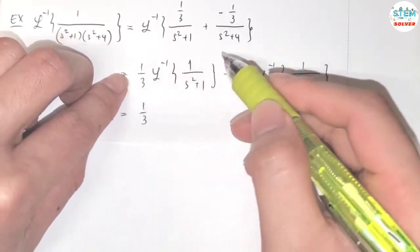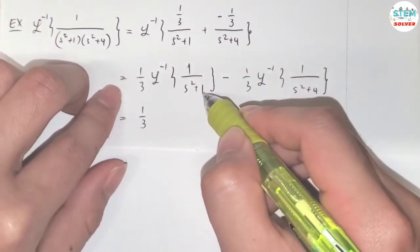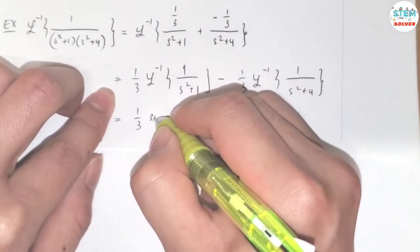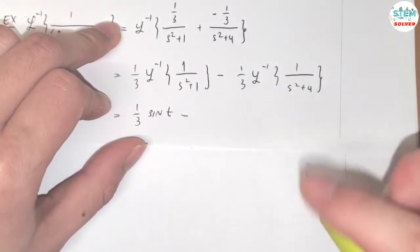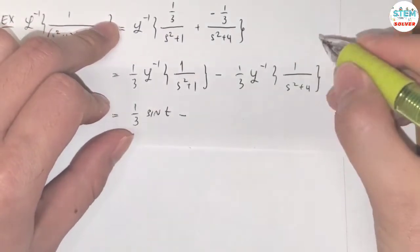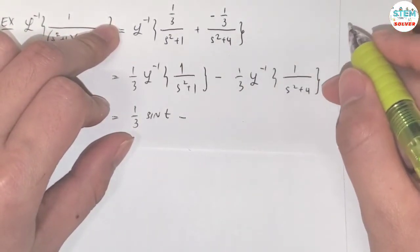So for this one, L inverse of 1 over x squared plus 1 is equal to sine t. For this one, L inverse of 1 over x squared plus 4, so it's almost close to the sine form, but we need to have the k on top, and in this case, the k is 2.